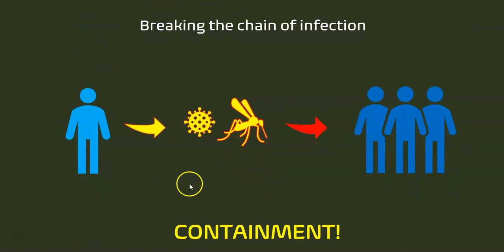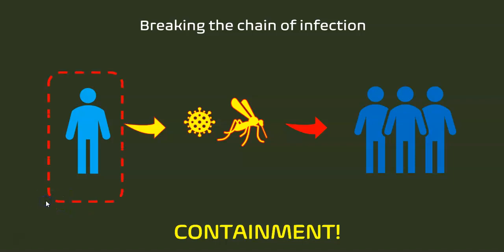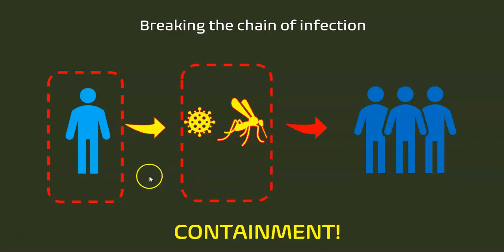The key aspect of controlling the spread of infection is containment. Containment involves the containment of the patient or the infected individual, as well as containment of the vector and the pathogen. This containment can go a long way in protecting the community.